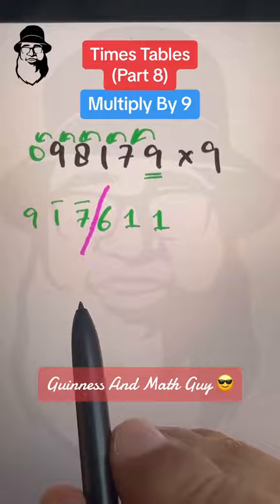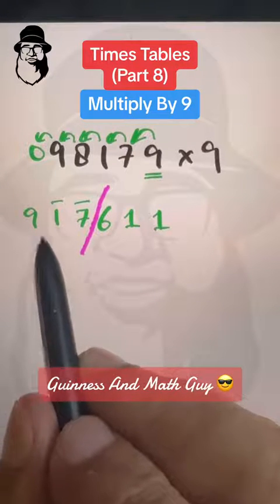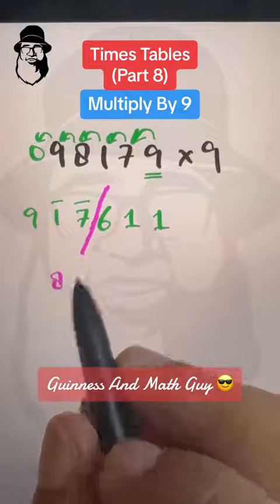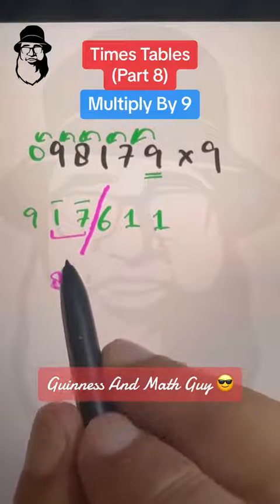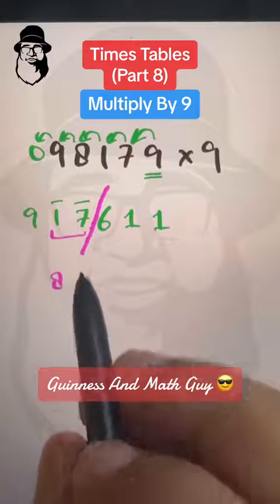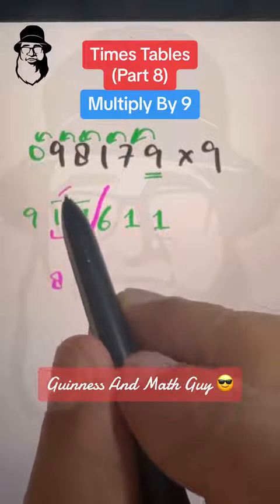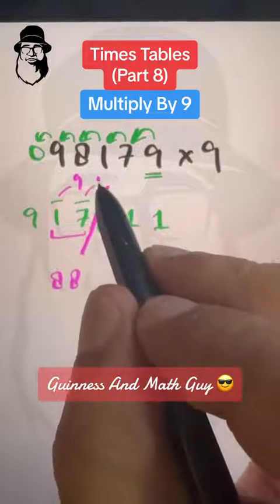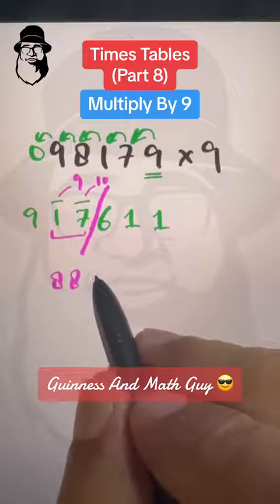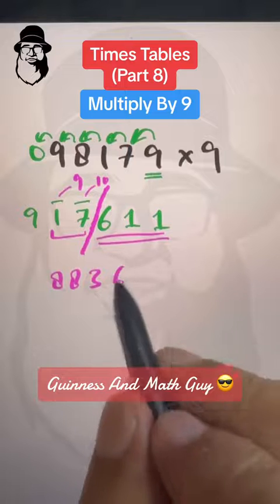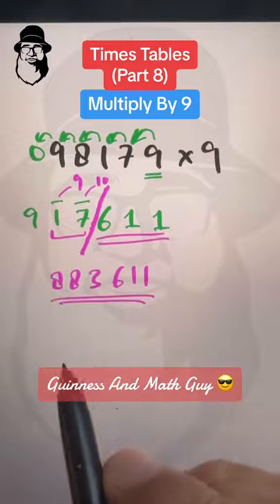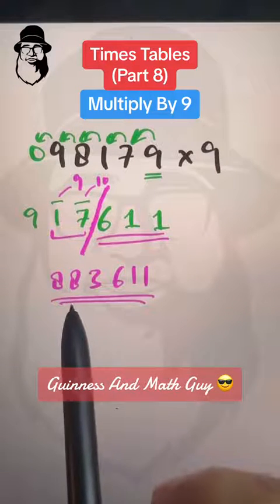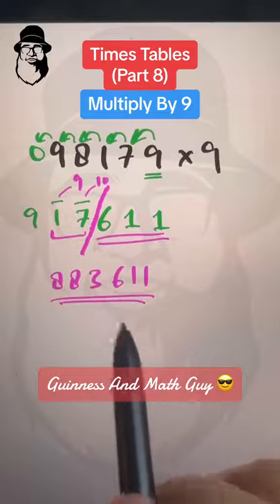There is a Vedic formula called 'all from 9 and the last from 10.' After the bar numbers, on the positive number we decrease 1, so it becomes 8. Then on the bar numbers we apply the formula: 1 from 9 is 8, and 7 from 10 is 3 (last from 10). We write 6, 1, 1 as they are. So the final answer for 98179 times 9 is 883661.